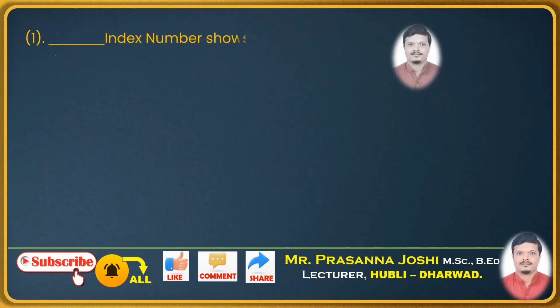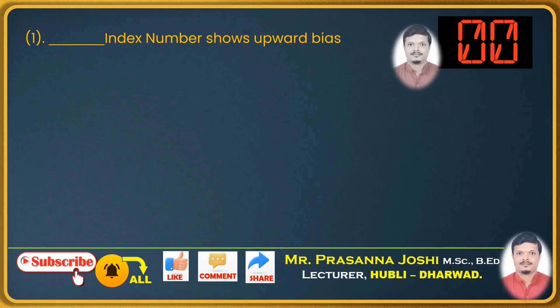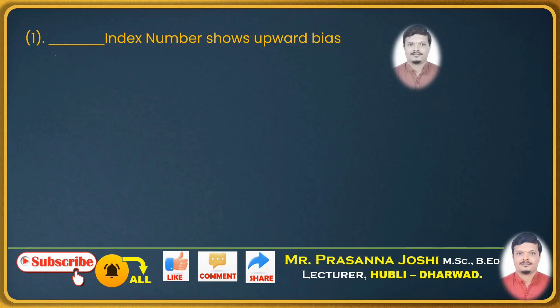Next, fill in the blanks. First question: dash index number shows upward bias. Laspeyre's index number shows upward bias, so the answer is Laspeyre's. If it had asked for downward bias, we would have written Paasche's index number as the answer.